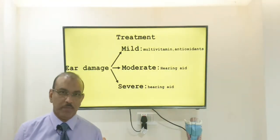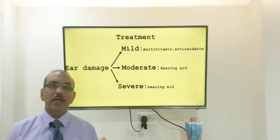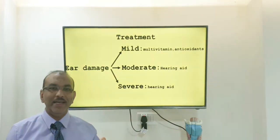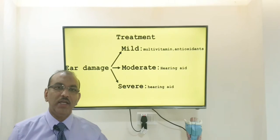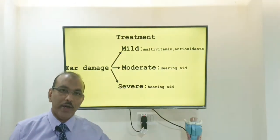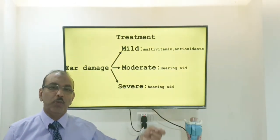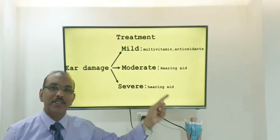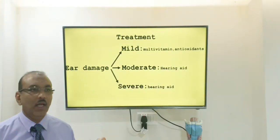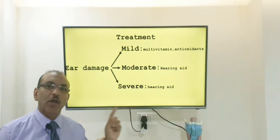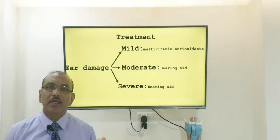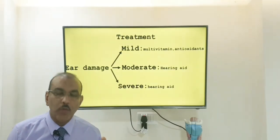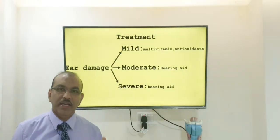Coming to treatment: for mild hearing loss, give advice and counselling on how to prevent re-exposure and stay away from loud sound, along with multivitamin tablets and antioxidants. For moderate and severe hearing loss where the patient cannot hear normally and speech discrimination is poor, they need a hearing aid.